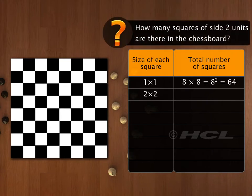How many squares of side 2 units are there in the chessboard? Observe that there are seven squares of side 2 units along the rows, and there are seven such rows. Thus, in all, there are 49 squares of side 2 units.